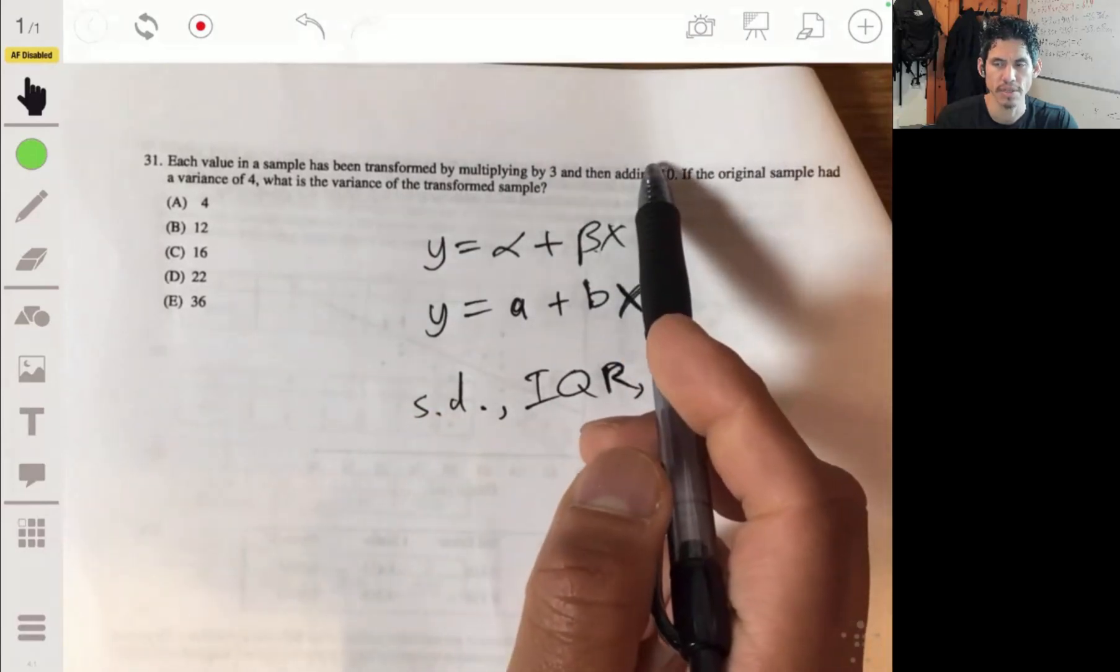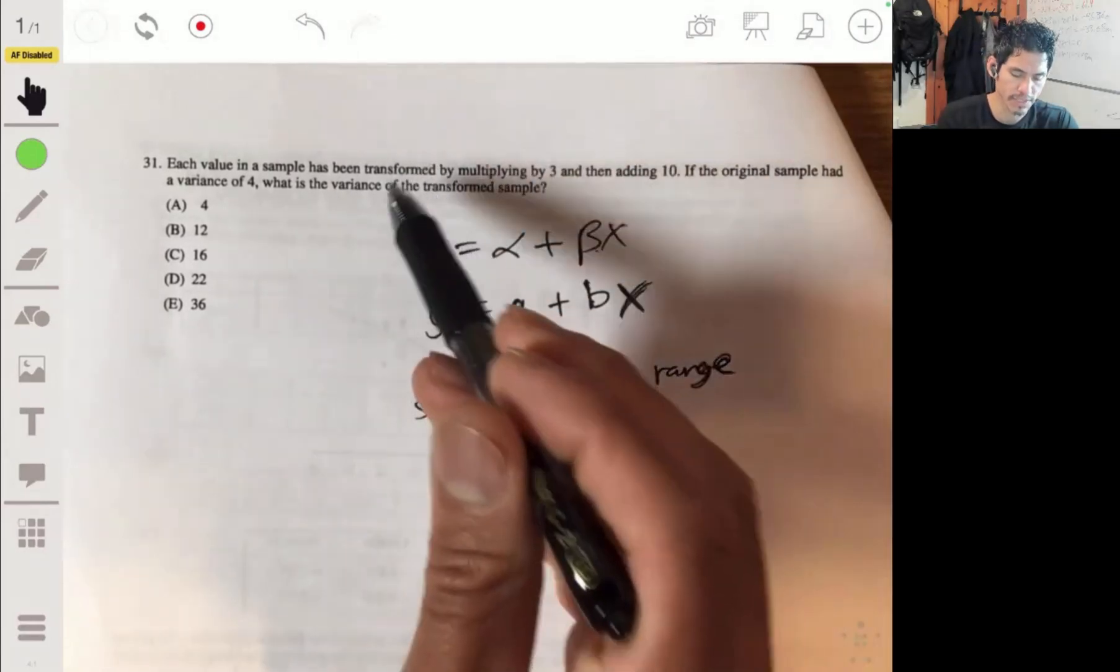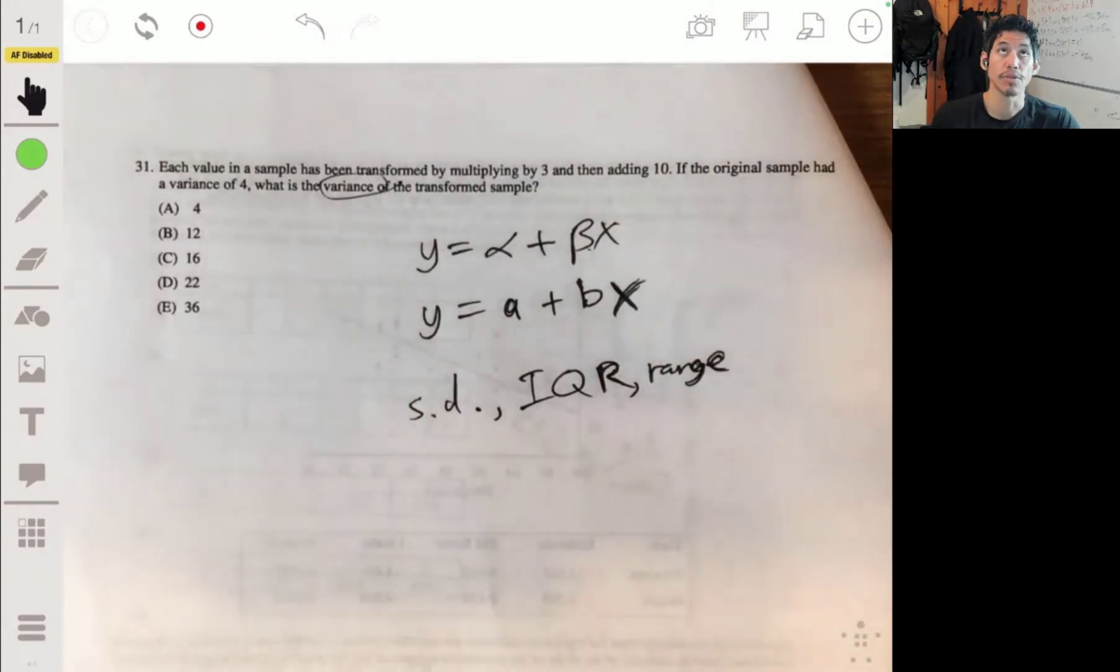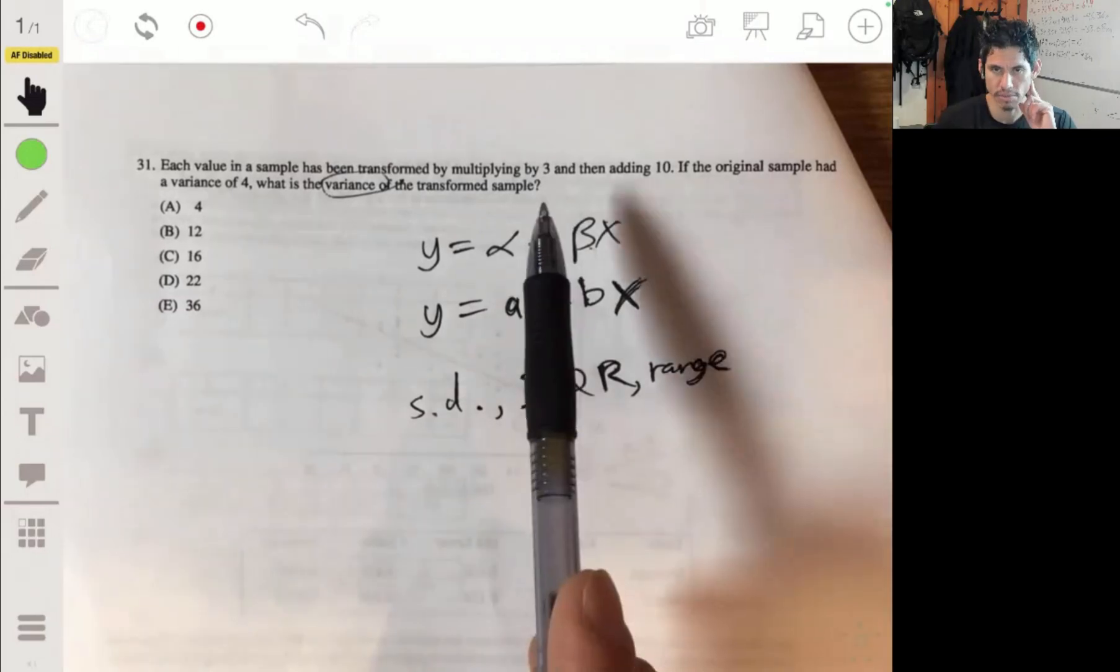So it doesn't matter if you, the adding doesn't change it because think about it. Let's say you're six feet and your buddy's eight feet tall. The spread between you two, between both you and your buddy, is two feet. You're two feet apart. If you were to add 10 feet to your heights, you would be 16 feet, you would be 18 feet. You're still two feet apart.